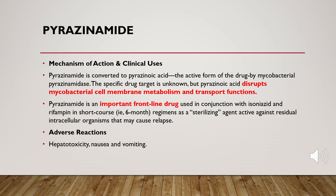Pyrazinamide is usually given in combination with isoniazid and rifampicin — the most common first-line combination for tuberculosis — used for six months. Pyrazinamide acts as a sterilizing agent.